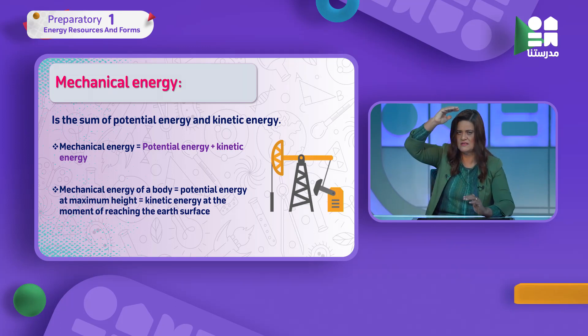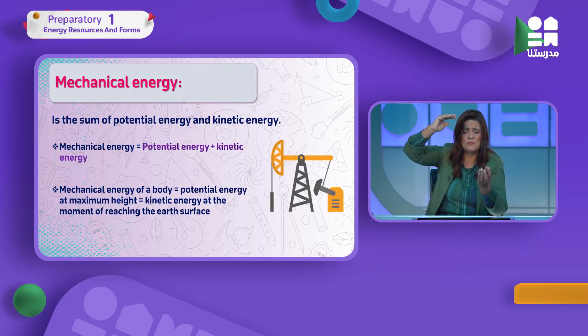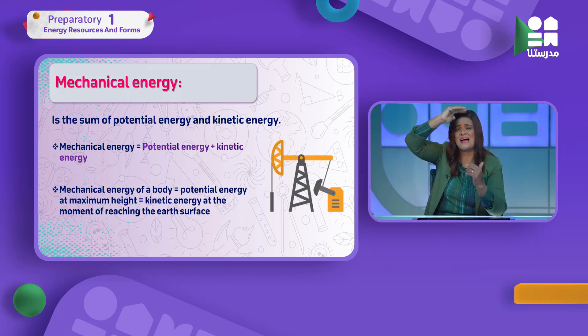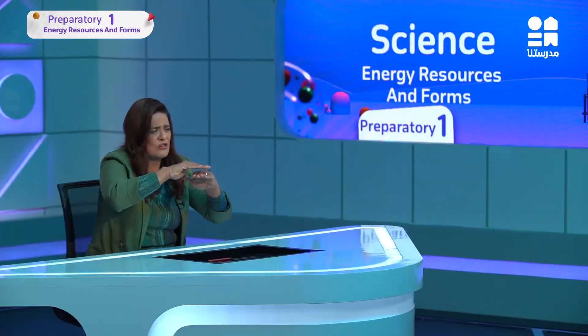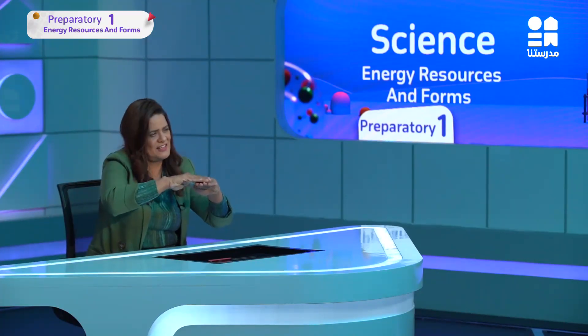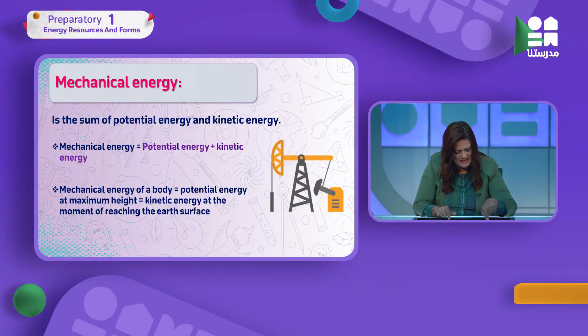An important point: mechanical energy of a body equals potential energy at maximum height, because at maximum height kinetic energy is zero. So mechanical energy = PE + 0 = PE. And just before reaching the ground, potential energy is zero and kinetic energy is maximum, so mechanical energy equals kinetic energy at that moment.